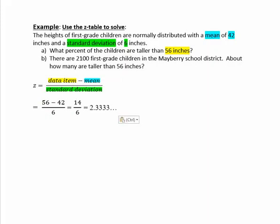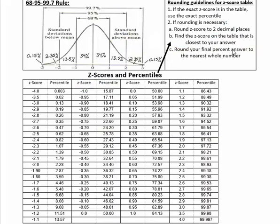Dividing that on a calculator gives us 2.33333 repeating. Using our guidelines, 2.3333 repeating z-score is not going to be in the table, so we will need to round.